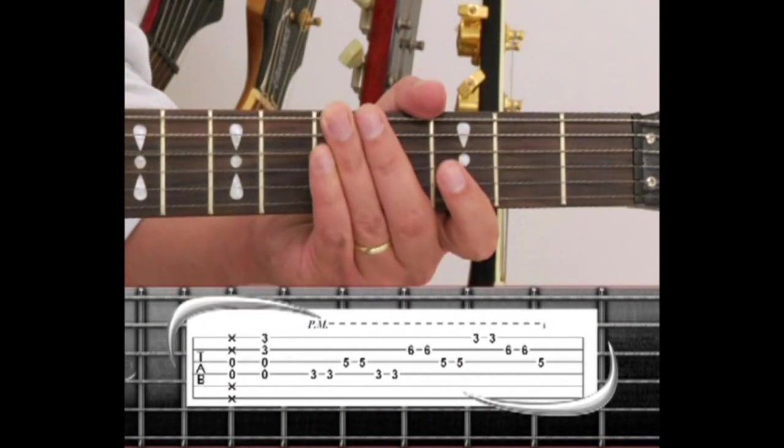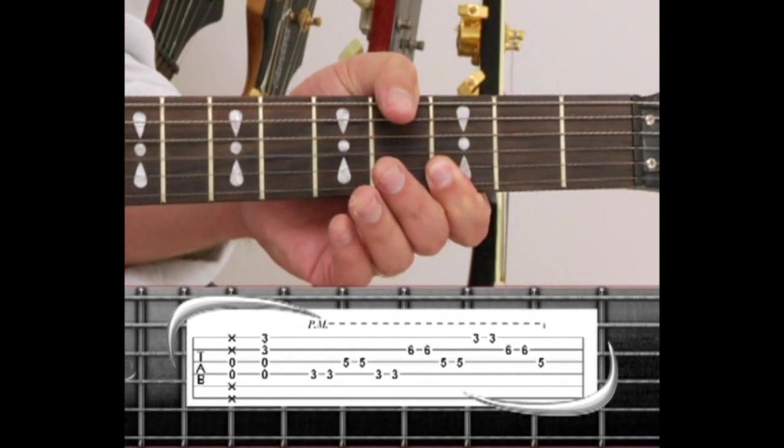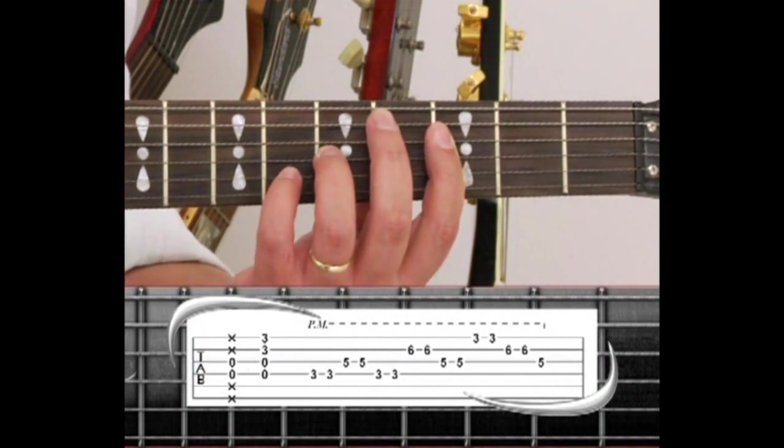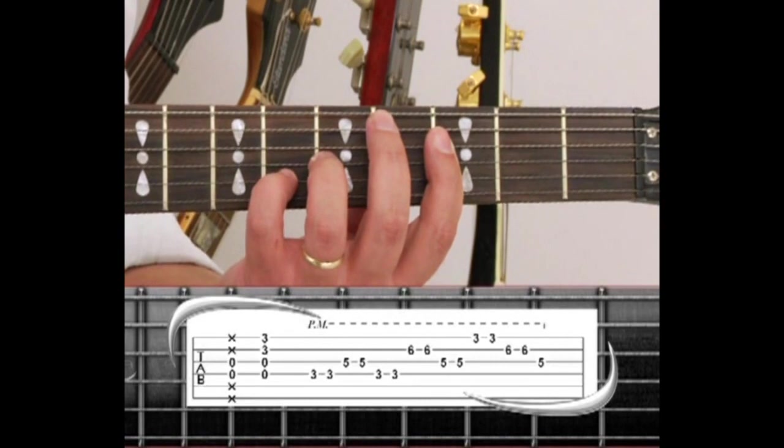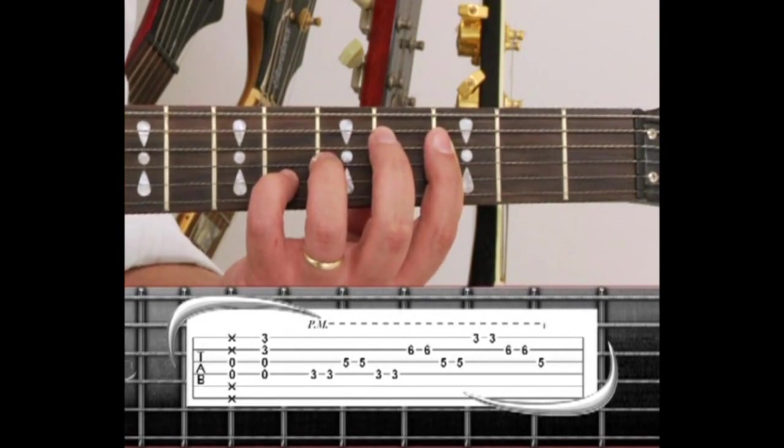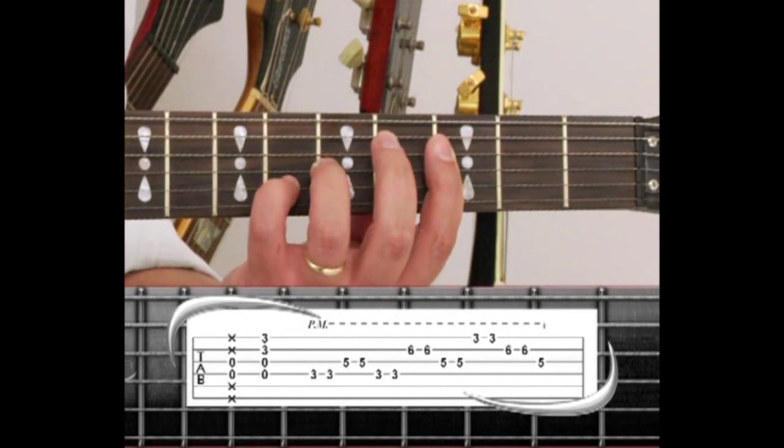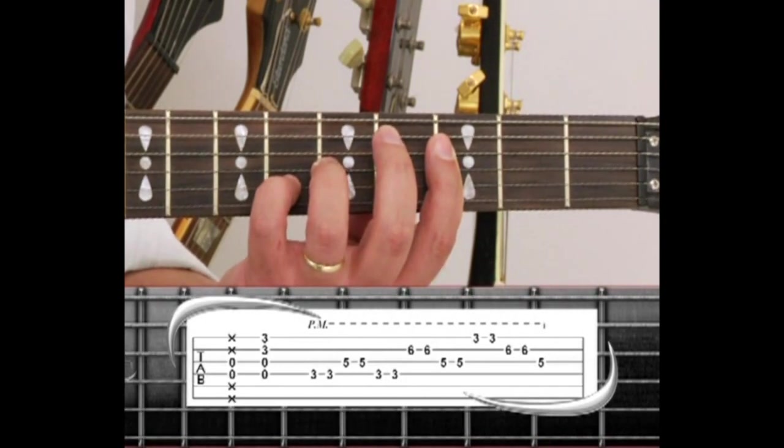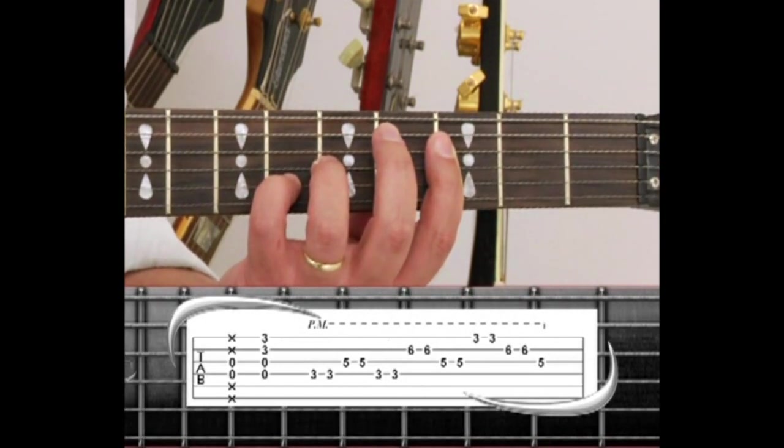Back to the G5 and switch to the Fsus2 and double-pick each string twice, starting with the 4th string, 3rd string, back to the 4th string, 2nd string. Next is the 3rd string, to the 1st string, to the 2nd string, then a single 3rd string.